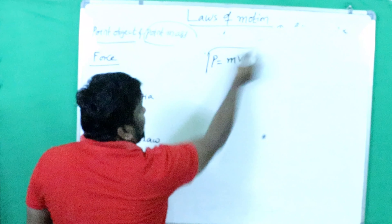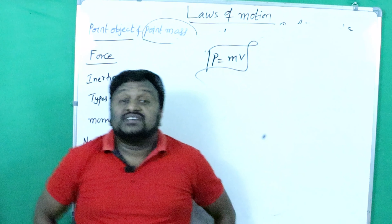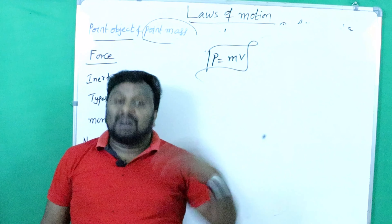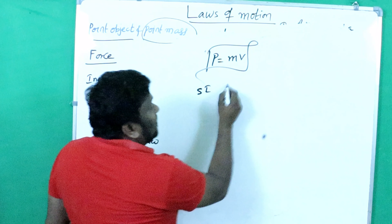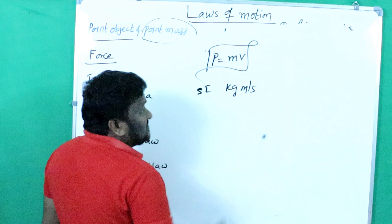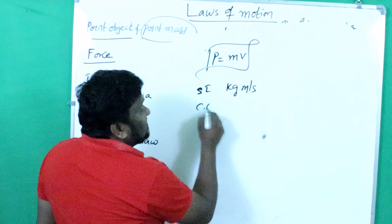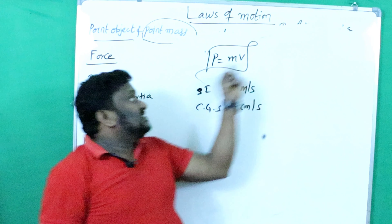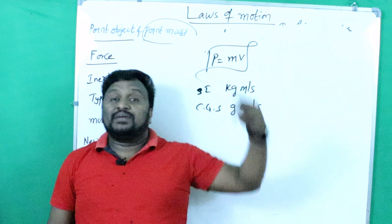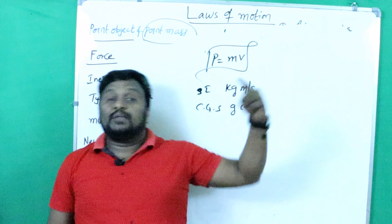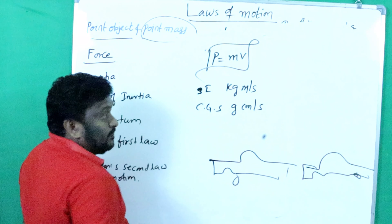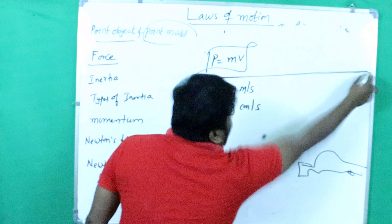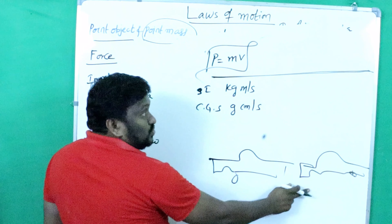Inertia was first explained by Galileo. Next, what is linear momentum? Momentum: p = m × v — the product of mass and velocity is called momentum. The body which has mass and velocity obviously possesses momentum. Its SI units are kg·m/s, and CGS units are g·cm/s.